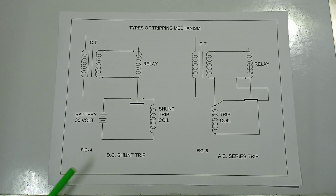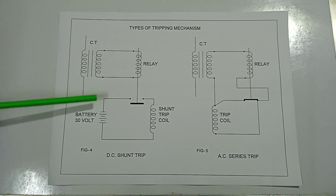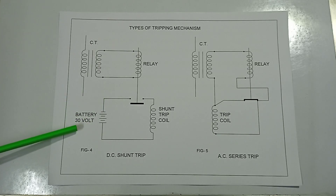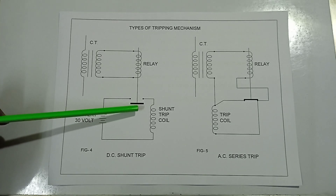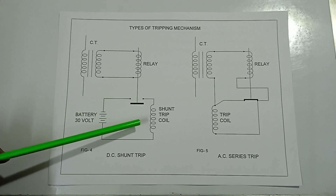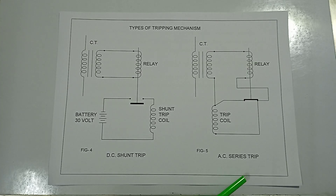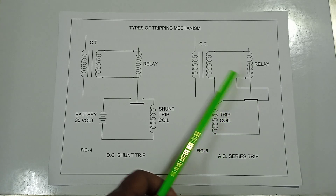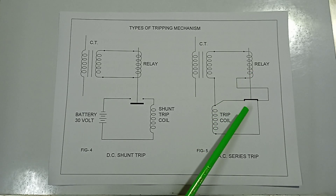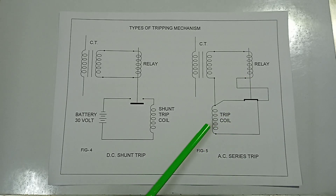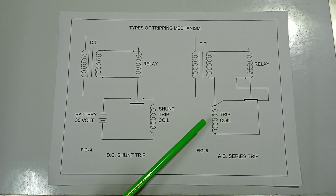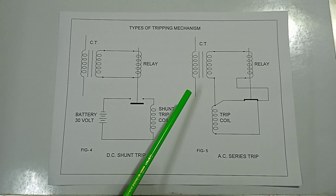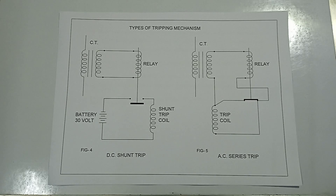In the DC shunt trip circuit, the battery energizes the relay; when the relay contact closes, the shunt trip coil is energized. In the AC series trip circuit, the trip circuit is normally shorted by the relay contact. When the relay is energized by the CT, it lifts the contact, and the trip coil is energized by the same CT current, activating the tripping mechanism.